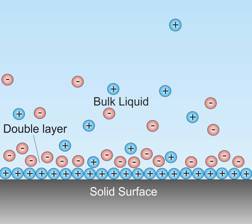The DL refers to two parallel layers of charge surrounding the object. The first layer, the surface charge, consists of ions adsorbed onto the object due to chemical interactions. The second layer is composed of ions attracted to the surface charge via the Coulomb force, electrically screening the first layer.